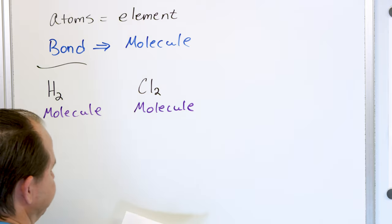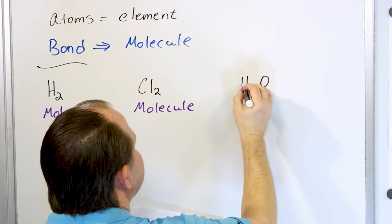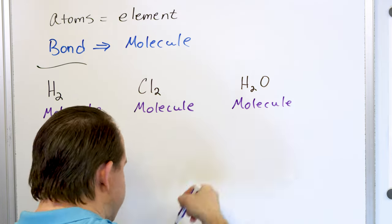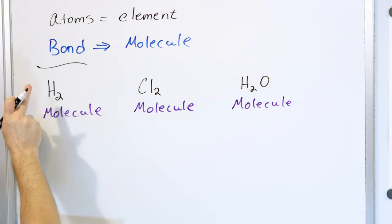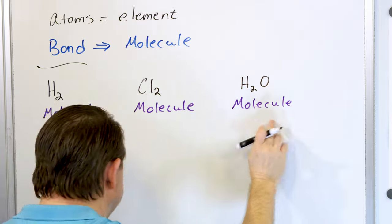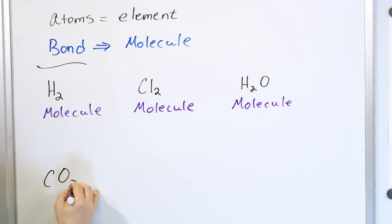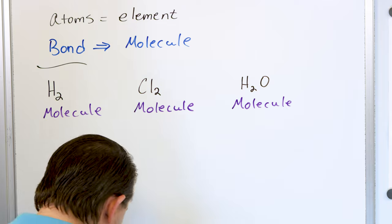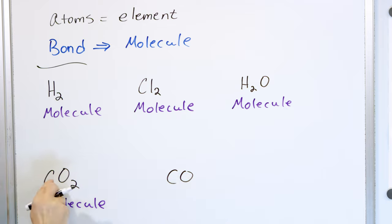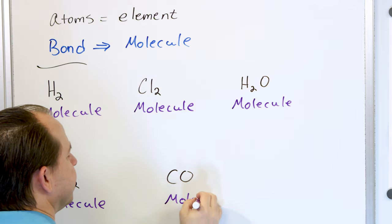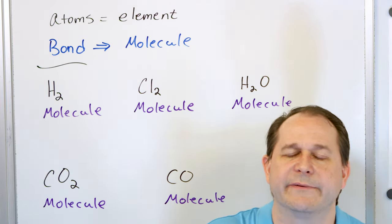H₂O — two atoms of hydrogen and one atom of oxygen connected together — forms the water molecule. CO₂ is one atom of carbon and two atoms of oxygen connected together: we call that a molecule. And CO — carbon monoxide — is carbon and one oxygen connected together, still a molecule. Everything here is a molecule because it's two or more atoms connected together.